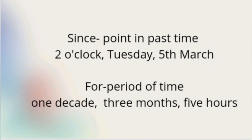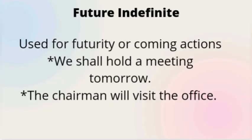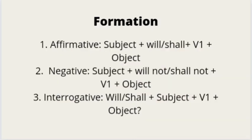We use 'since' with a point in past time and 'for' with a period of time. Now let's look at future indefinite. This tense is used for future or coming actions — for example, we shall hold a meeting tomorrow. In modern usage, present continuous is preferred — for example, we are holding a meeting tomorrow. Another example: the chairman will visit the office. For the formation: if affirmative, begin with subject, will or shall, first form of the verb, and object. With I and we, 'shall' is used and with others 'will' is used.